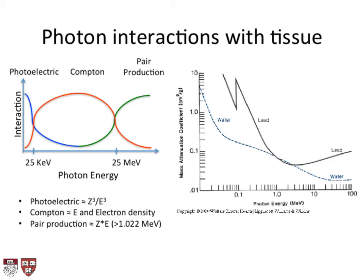Depending on the energy of the photon, the likelihood of each interaction changes. Photoelectric effect is very likely at 25 keV — the diagnostic x-ray range. The photoelectric effect and Compton interactions are approximately equal likelihood around 25-100 keV. Compton then dominates all the way up to 25 MeV. Pair production starts at 1.02 MeV and increases, dominating above 25 MeV. Photoelectric is dependent on Z-cubed over E-cubed; Compton is inversely proportional to E and dependent on electron density; pair production is proportional to Z times E.